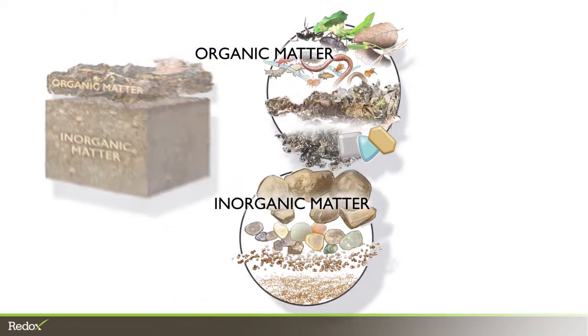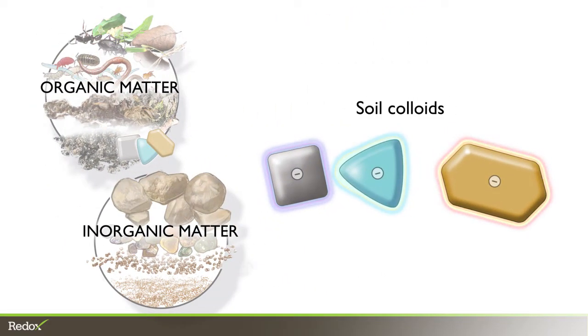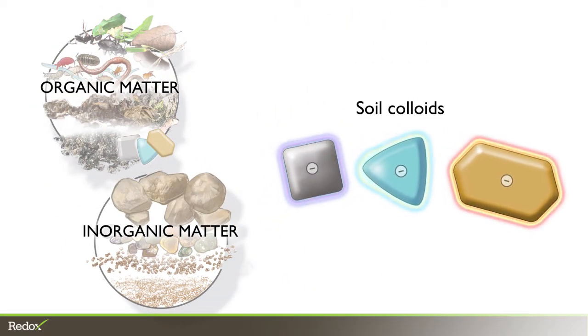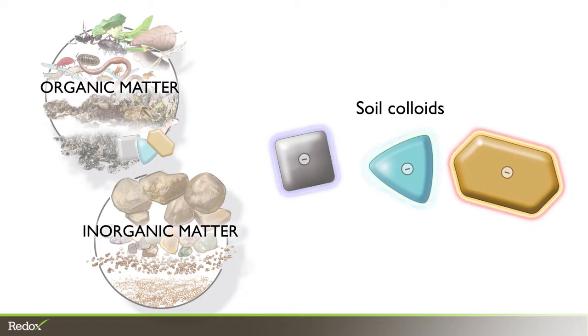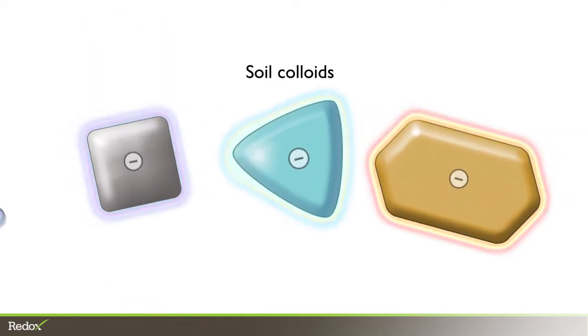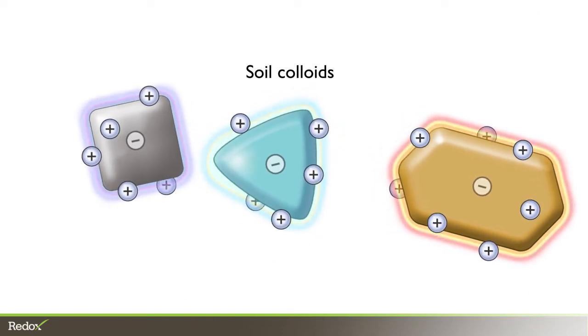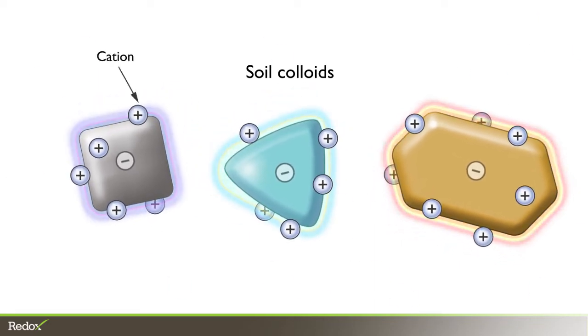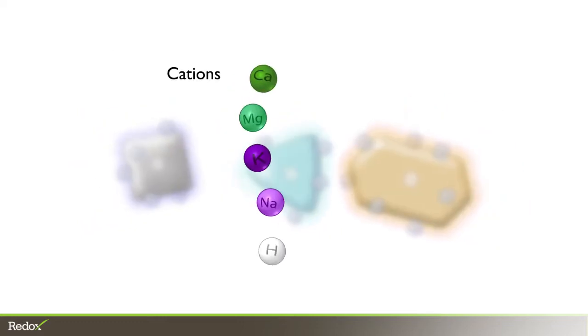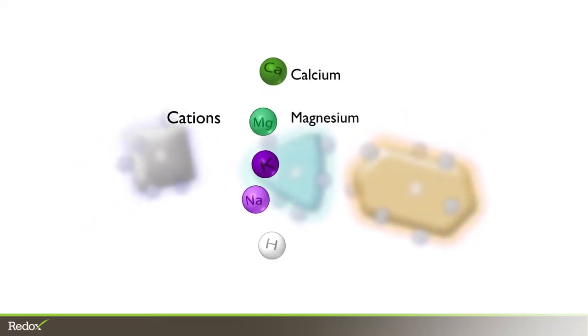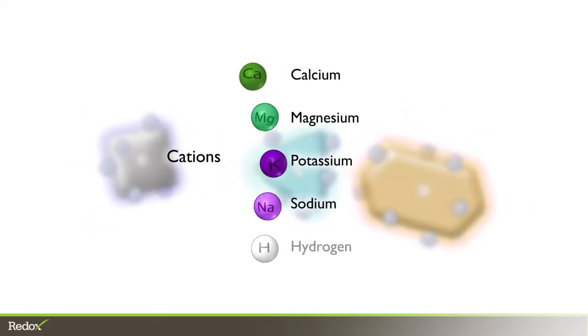At a molecular level, soil components are chemically active and interact based on their charge. Both organic matter and mineral particles, known as soil colloids, have a net negative charge, and they can attract and hold mineral ions that have positive charges called cations. Key influential cations are calcium, magnesium, potassium, sodium, and hydrogen.